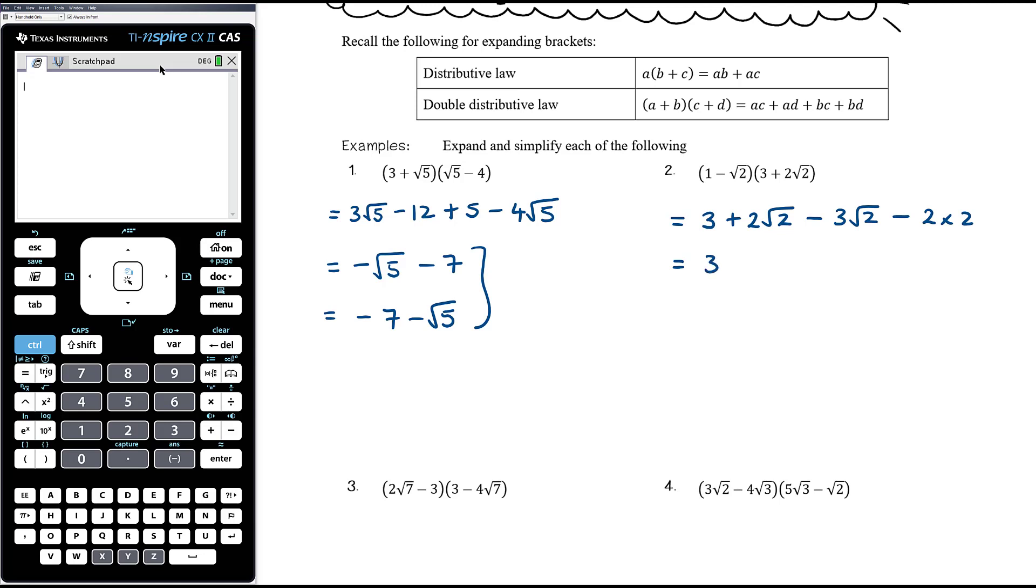So we've got 3 plus 2 root 2 minus 3 root 2, let's just do the 3 minus, 2 times 2 is 4, so it's 3 minus 4, which is negative 1. And 2 root 2 minus 3 root 2, which is negative root 2. Again, both negatives. Yes, it's the same as you writing it as negative root 2 minus 1, exactly the same. Neither is better or worse than the other.